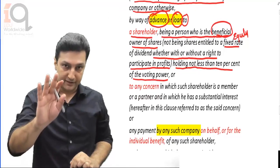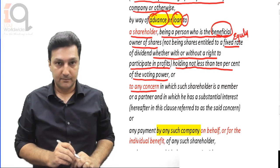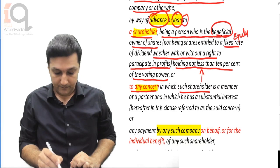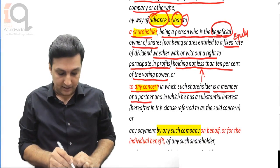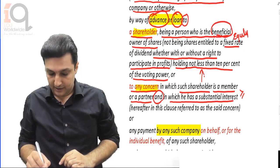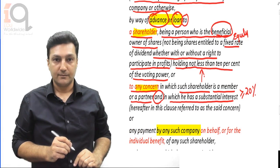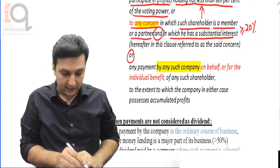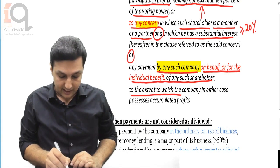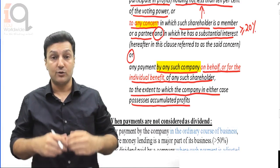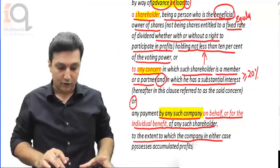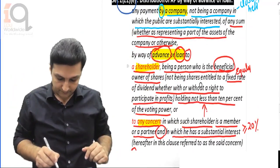And then it continues: 'or to any concern in which such shareholder is a member or a partner and in which he has substantial interest' - as per the definition of substantial interest, it means more than or equal to 20% profit share. And also 'any payment by any such company on behalf of or for the individual benefit of such shareholders, to the extent to which the company in either case possesses accumulated profits, is also deemed a dividend.' So section 2(22)E dividend has arrived. Simply put: loan or advance to a shareholder - that is deemed dividend.